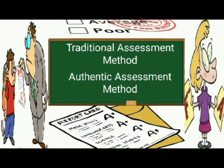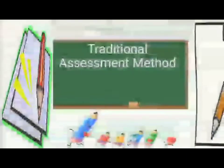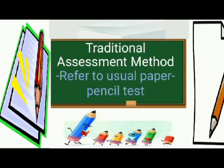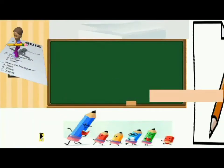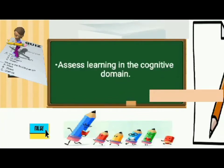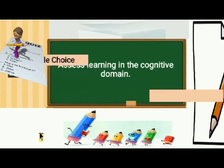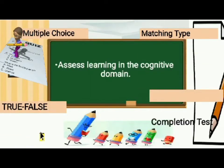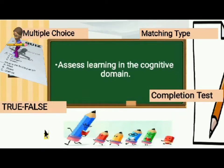Assessment methods can be classified as traditional assessment method and authentic assessment method. Traditional assessment method refers to usual paper-pencil tests, which assess learning in the cognitive domain. Matching type, true or false, multiple choice, short answer, and completion tests are examples of assessment tools under the traditional method.